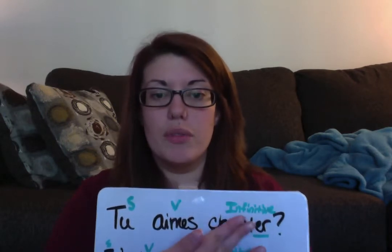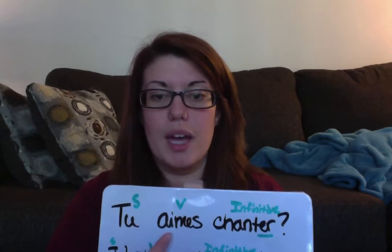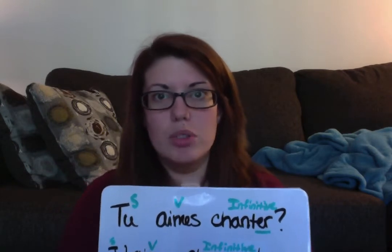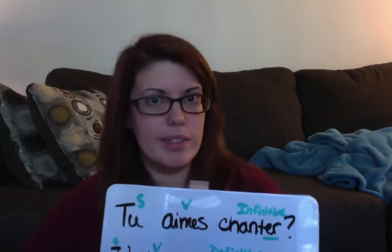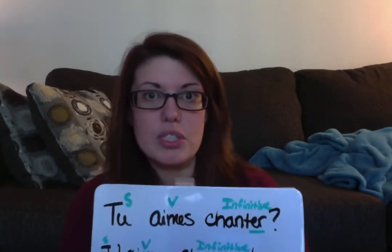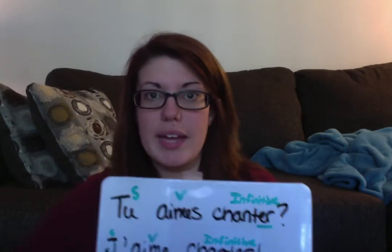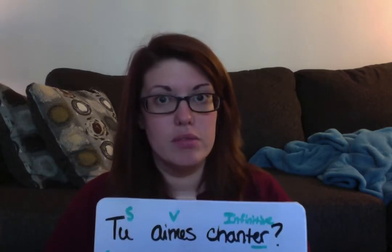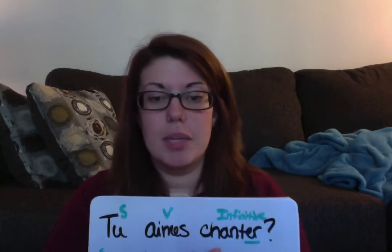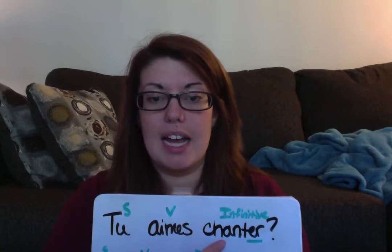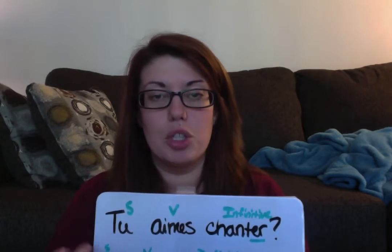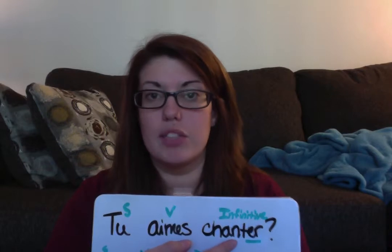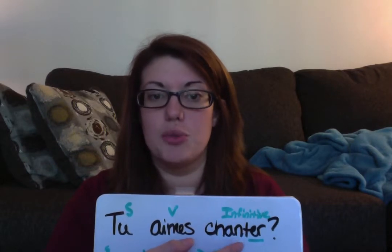You could also follow tu aimes with an object. For example, tu aimes le tableau — do you like the board in the classroom? Tu aimes le poster — do you like the poster? That would be fine. But when you follow it with an action, it needs to be a verb that is not conjugated. So if you follow tu aimes with an action, you don't conjugate the verb, you don't change it at all.